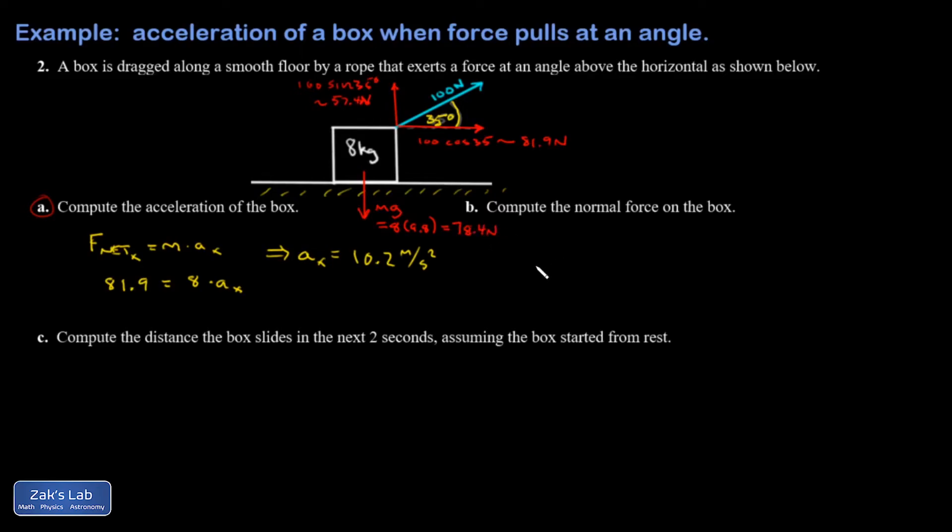And my normal force is not 78.4 newtons. The reason why is that I have another vertical force tampering with the system. So I'm going to have to put in the normal force as an unknown, pushing up. I'll call it n. And then I have to actually analyze forces in the y direction to figure this out.